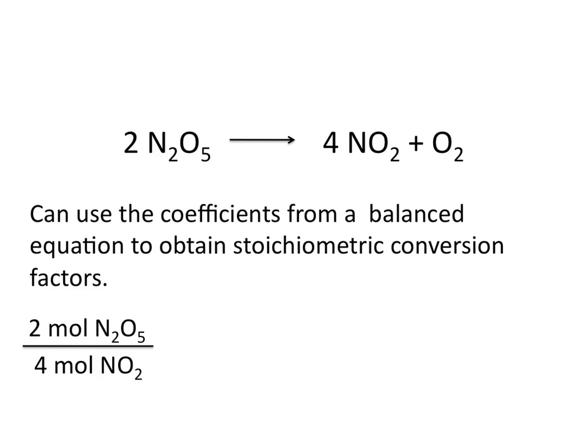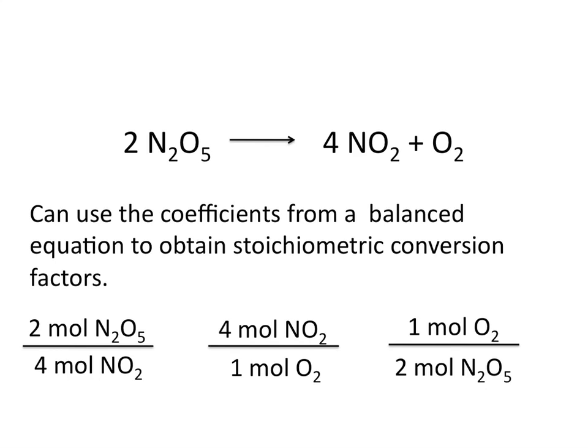For example, this tells us that for every two moles of N2O5 decomposed, four moles of NO2 are produced. We could also use this equation to tell us that for every four moles of NO2 produced, one mole of O2 would also be produced. And likewise, this balanced equation also tells us that for every one mole of O2 produced, two moles of N2O5 are required.